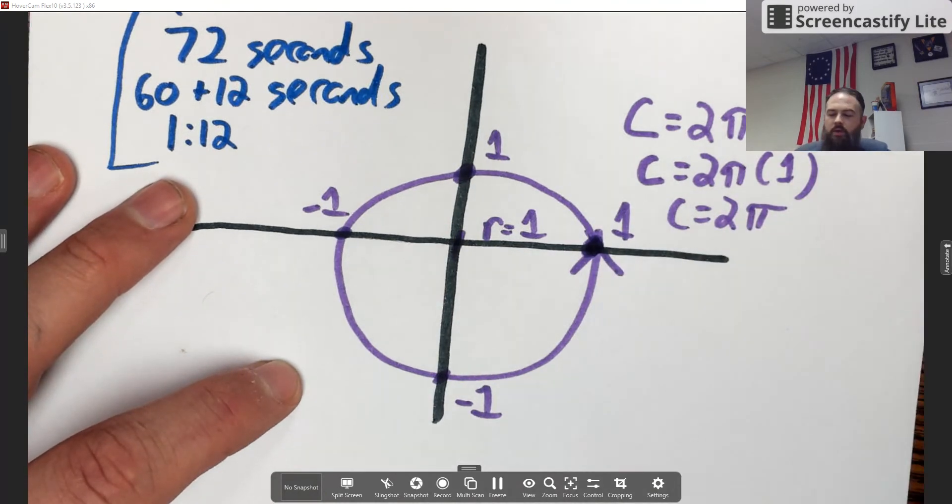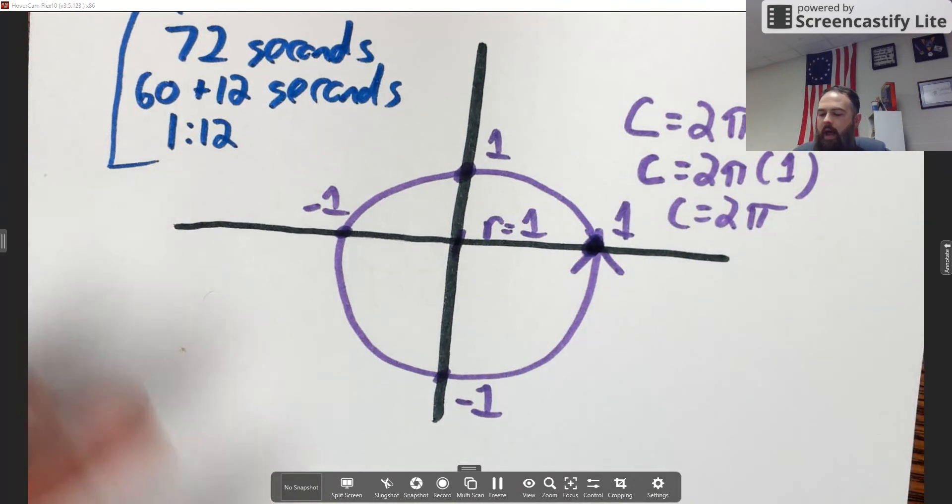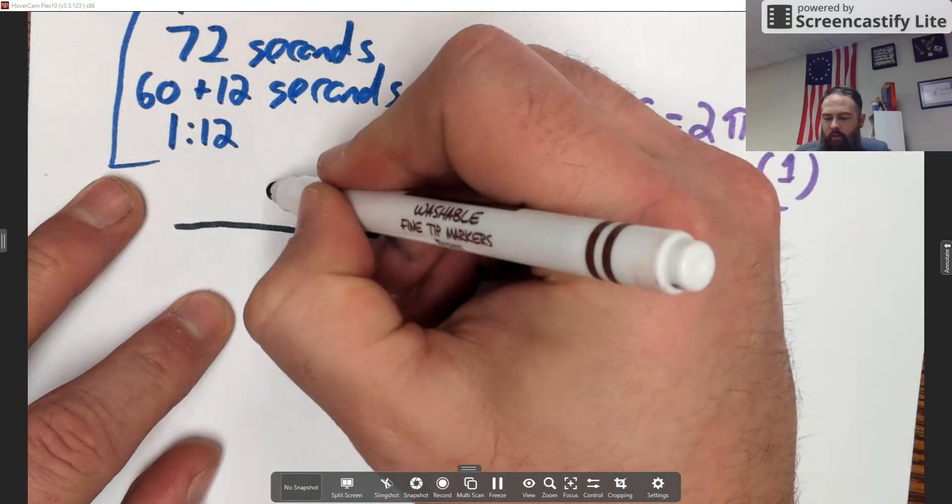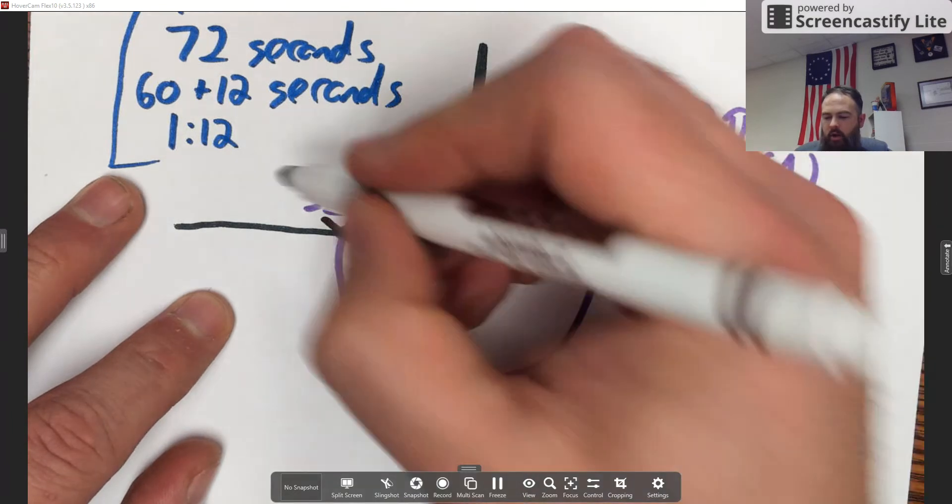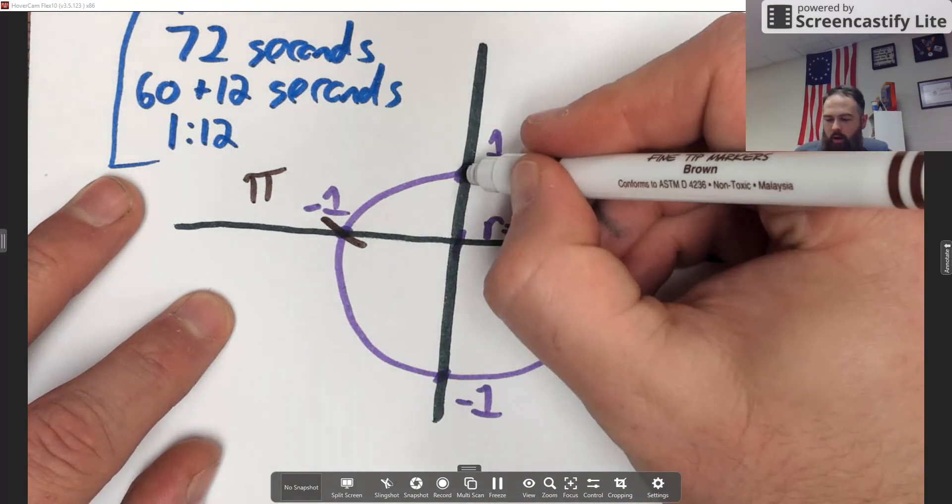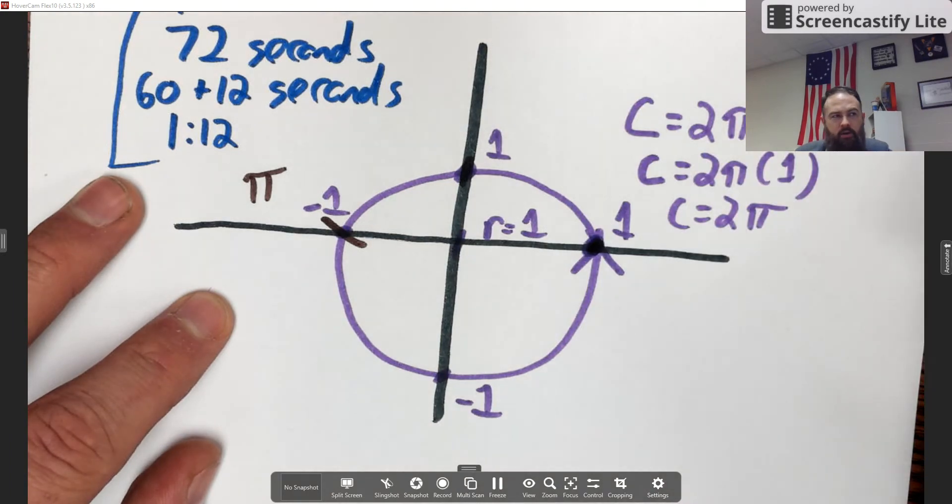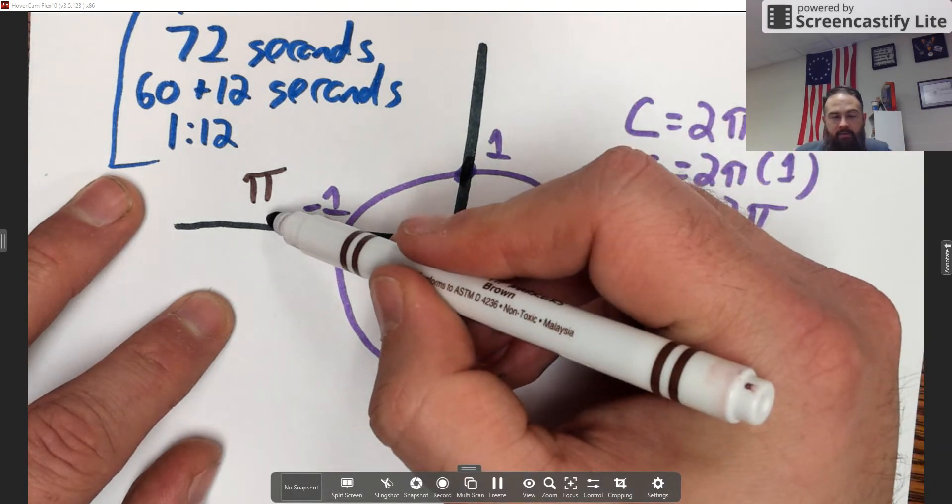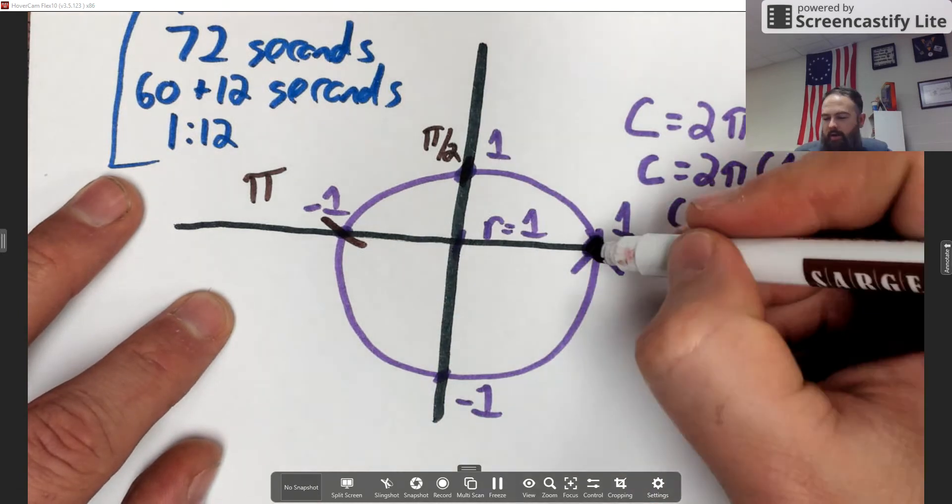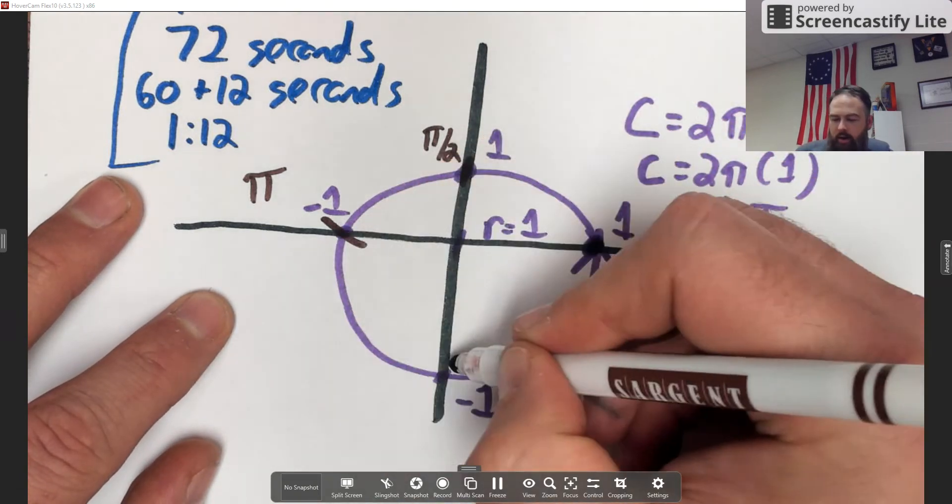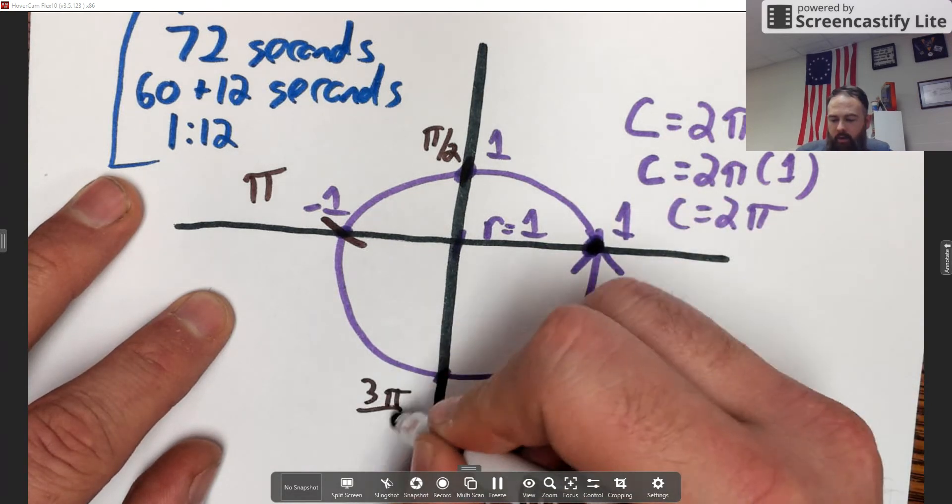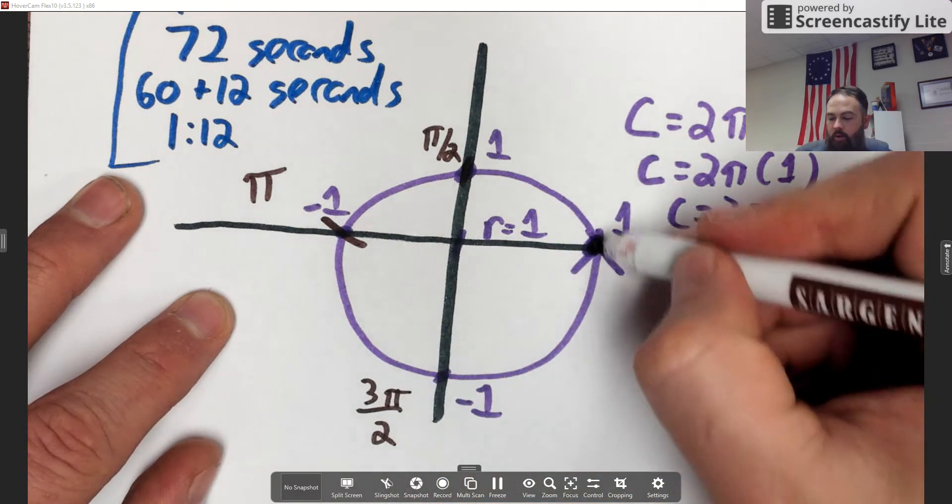If I was to go halfway around the circle from here and stop there, well that would be half of 2 pi, which is just one pi. If I was to go up to here, my traditional 90 degree angle, well that would be again half of this, so that's pi over 2. If I was to go pi and then another half pi, another 90 degrees, well that's 3 pi over 2.